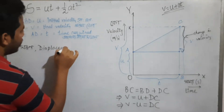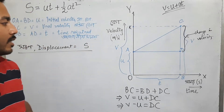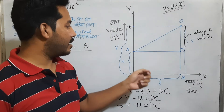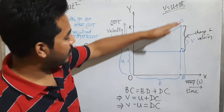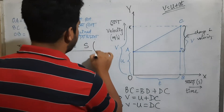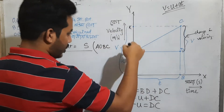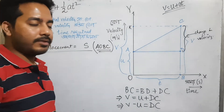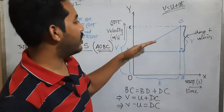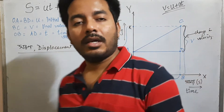With the help of this graph, we are going to put displacement as the area under the curve. The area under the velocity-time graph is covered. This area represents displacement.